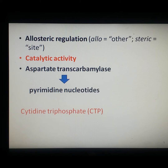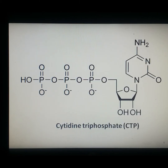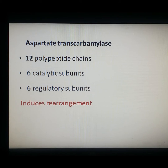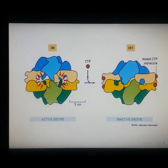One of the best-studied allosteric enzyme examples is aspartate transcarbamylase, which catalyzes the first step in the synthesis of pyrimidine nucleotides. It is regulated by feedback inhibition by cytidine triphosphate, CTP. Aspartate transcarbamylase consists of 12 distinct polypeptide chains: six catalytic subunits and six regulatory subunits. Before CTP binds, the enzyme is active.